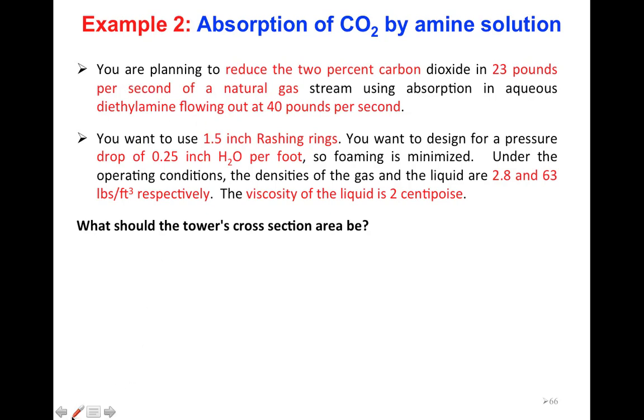We are planning to reduce the 2% carbon dioxide in 23 pounds per second of natural gas stream. We are going to reduce by 2% the amount of CO2 in natural gas that has the mass flow rate 23 pounds per second. This is my gas mass flow rate, which is 23 pounds per second.